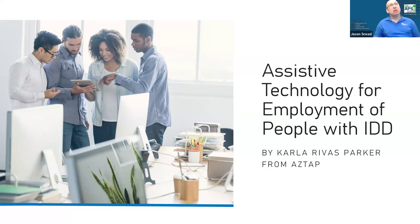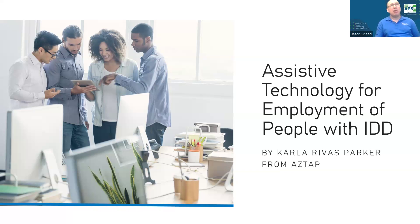We do have live closed captioning and live ASL interpreting today, so when you talk please speak slowly. If you want to raise your hand you can push star nine. To unmute yourself if you're on the phone you can push star six. You can also use the emoji reaction buttons on the Zoom window, and the closed captioning button is at the bottom of the Zoom window as well.